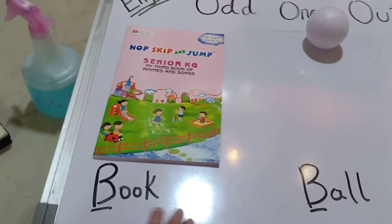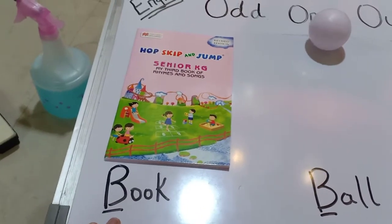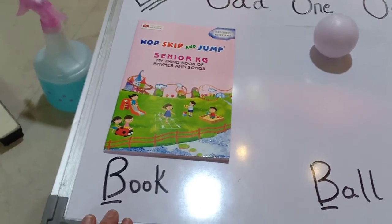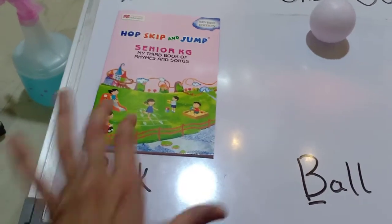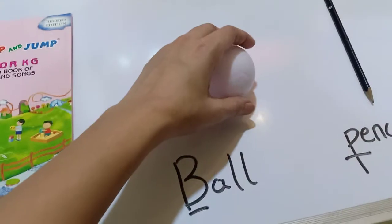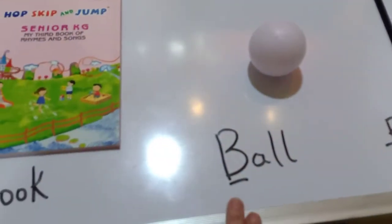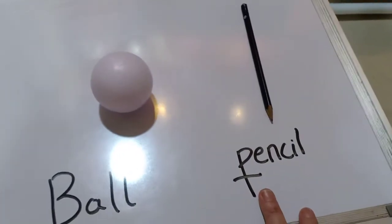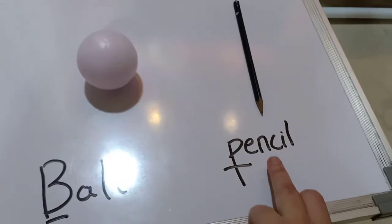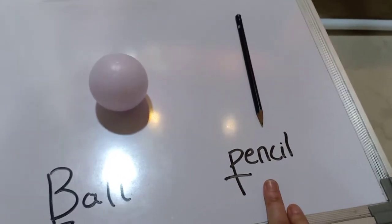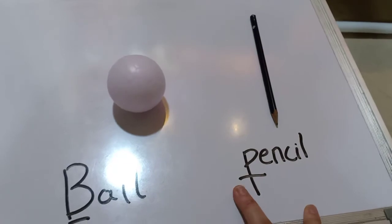Now, first let us see the sound of 'book' — B-O-O-K, book. Which letter is 'book' starting from? It starts from B. So it is sounding b for book. Then if we see the ball — B-A-L-L, ball — so that is b-b-b-ball.